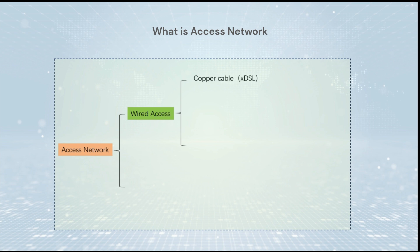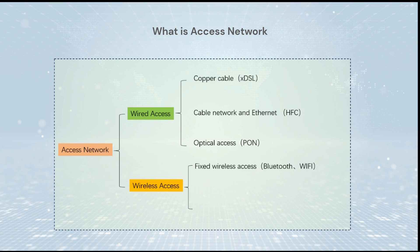Examples of wired access are FTTH and PON. The common types of wireless access are Wi-Fi, 4G, and 5G mobile transmission.